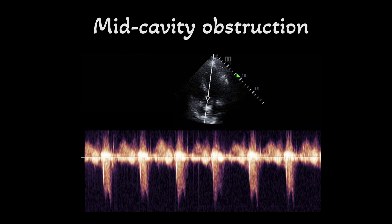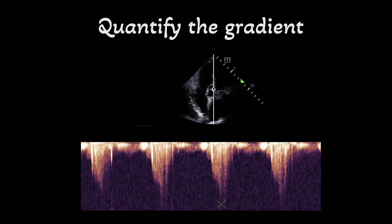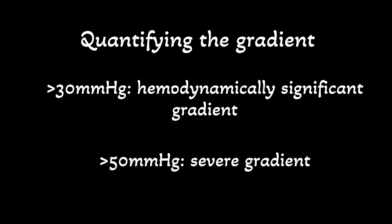You see a rabbit-ear pattern on continuous wave Doppler in mid-cavity obstruction. To quantify the gradient, measure the peak systolic velocity of the curve; the ultrasound machine will automatically calculate the gradient using Bernoulli's equation. In this case, the gradient was 36 mmHg. A gradient more than 30 mmHg is considered hemodynamically significant, while more than 50 is considered severe. However, do not ignore gradients less than 30 — like tamponade, LVOTO and mid-cavity obstruction exist on a spectrum. A gradient less than 30 with other manifestations such as worsening shock, SAM, and MR in the presence of a substrate is important enough to require treatment.